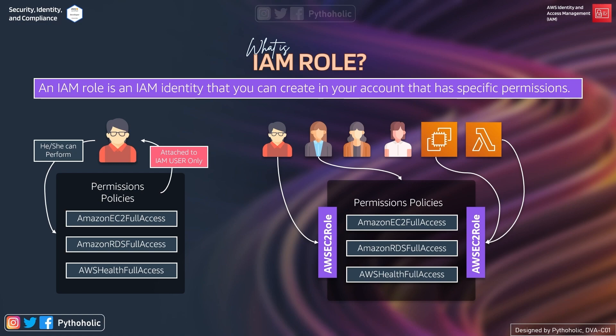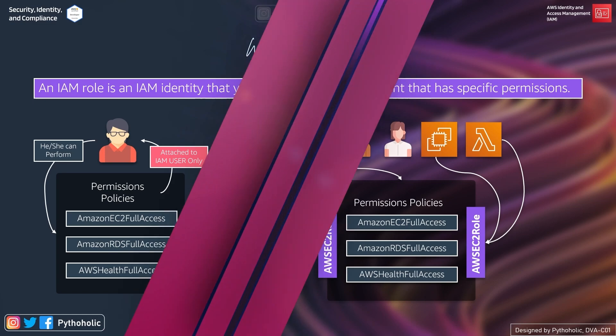You might ask why a Lambda function would need an EC2 role. Suppose you're working on a script that automatically creates an EC2 instance — by default, Lambda does not have sufficient permissions to use EC2 resources. So you can create a role, attach an EC2 policy to that role, and attach the same role to the Lambda function. With that, Lambda will have sufficient permissions to create or manage EC2 instances.